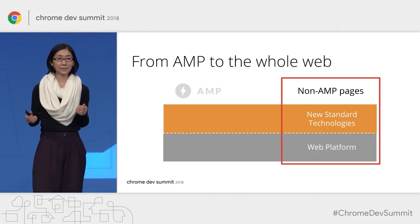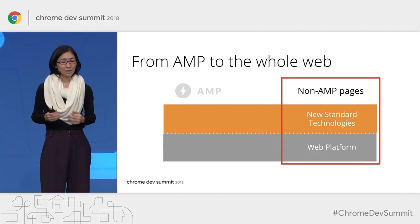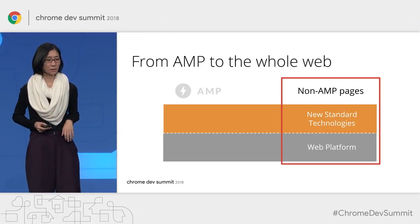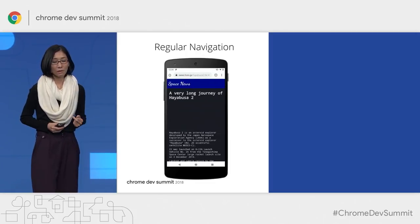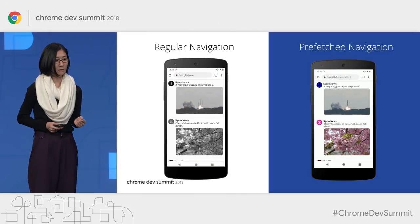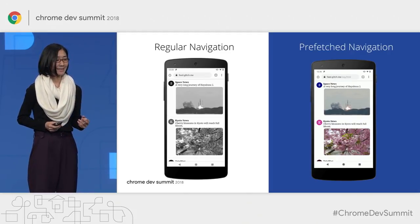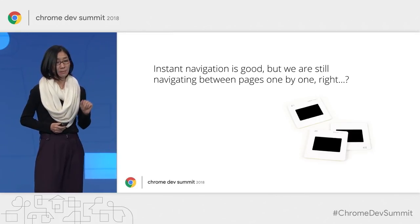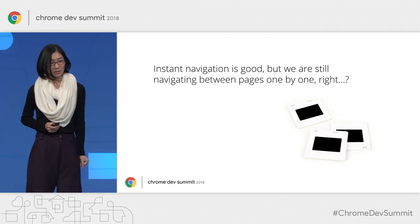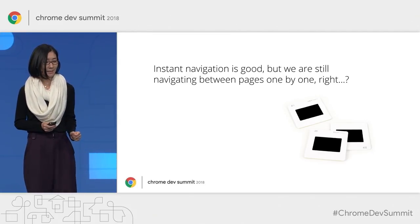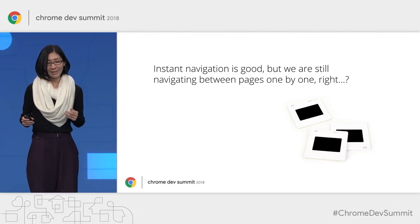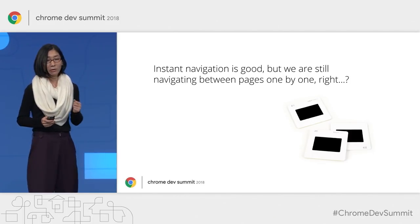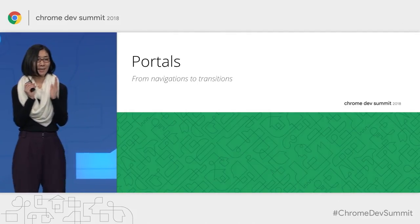We've seen the benefits that signed exchanges bring to AMP publishers. But it's important not to forget that this will also benefit all pages on the web. An additional example of regular cross-site navigation: on a slow network the content loads slowly, but with prefetch with web packaging, the user is navigating to a page on a different site instantly — the prefetch is done from the cache of the referral site in a privacy-preserving manner. However, we're still doing navigations, and it still feels like progressing through pages as a disjointed experience. We've been wondering how to improve this even further. Let me introduce our latest proposal: portals.